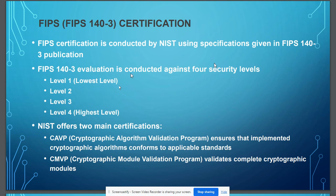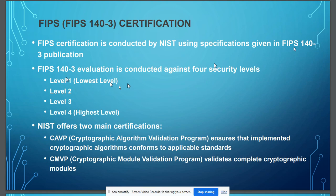FIPS 140-3 evaluation is conducted against four security levels, from Level 1 to Level 4. Level 1 is the lowest and Level 4 is the highest. The lowest level has minimum requirements, so it will be easy to implement, easy to meet, and less time and money will be spent. The highest level will require the most stringent requirements, requiring more time and money to implement.